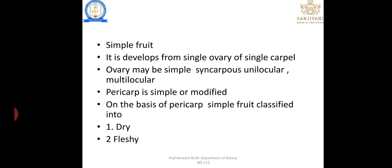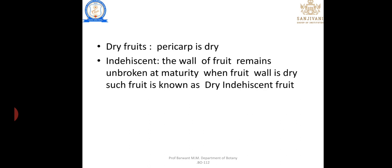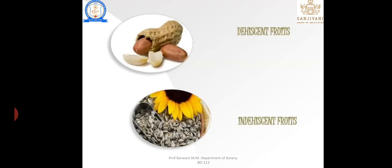Dry fruit: the pericarp of the fruit is dry in nature. They are classified into indehiscent and dehiscent. In indehiscent fruit, the wall of the fruit remains unbroken at maturity — when the fruit wall is dry, such fruit is known as dry indehiscent. In dehiscent fruit, like a pod, the fruit wall breaks open at maturity.